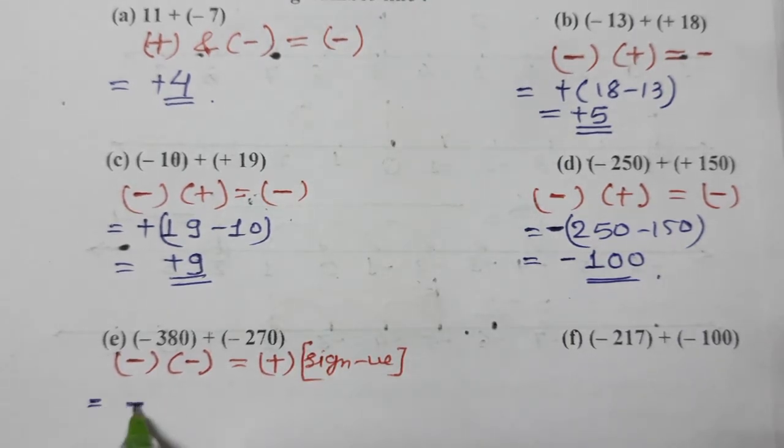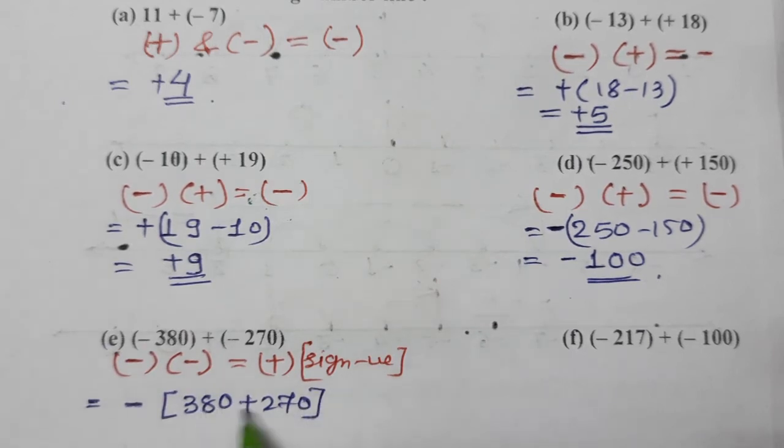The sign is negative. So let's add them and put the sign. So negative will come out and we have to add 380 and 270, and put the sign. The sign will be negative. So we have added and put the sign outside. So minus minus is plus, and the sign minus comes, so we add them.